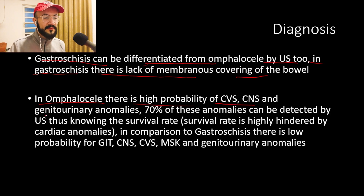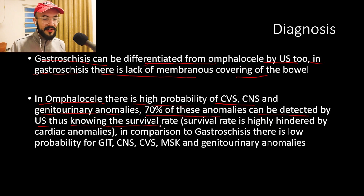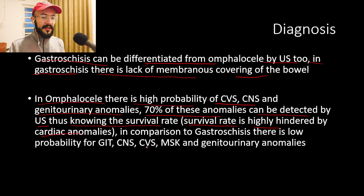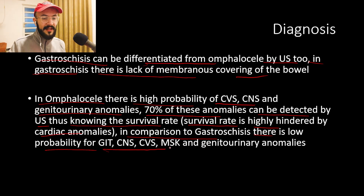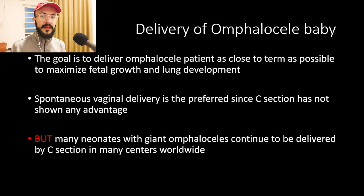In omphalocele, there is a high probability of cardiovascular, central nervous system, and genitourinary anomalies; 70% of these anomalies can be detected by ultrasound, which informs the survival rate since survival is highly affected by these anomalies, especially cardiac anomalies. In comparison, gastroschisis has a low probability of GI, CNS, cardiovascular, musculoskeletal, and genitourinary anomalies.